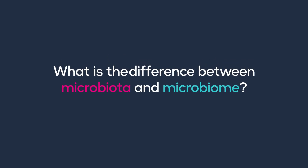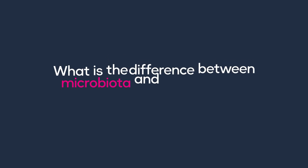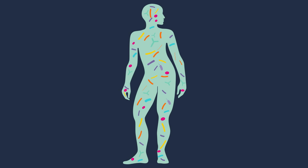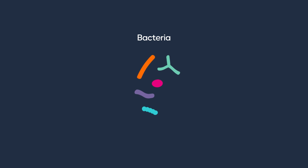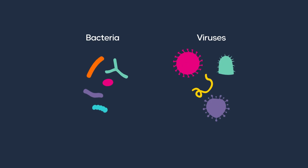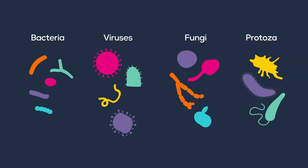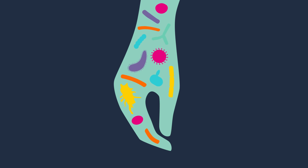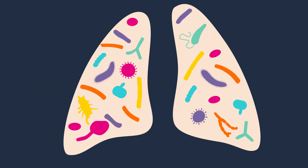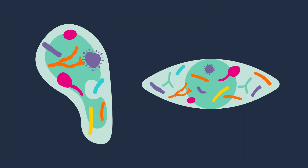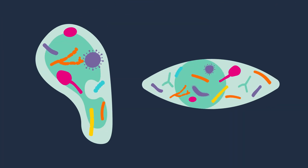What is the difference between microbiota and microbiome? The human body carries more than a hundred trillion microorganisms — not only bacteria, but also viruses, fungi, and protozoa. They live on our skin, in our lungs, eyes, and ears. They're pretty much everywhere.